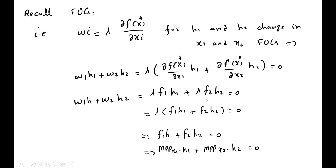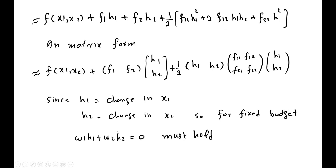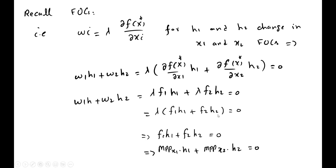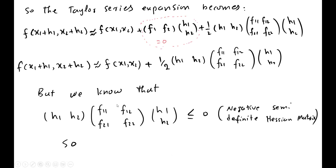We set f1·h1 + f2·h2 equal to zero because of the earlier assumption that w1·h1 + w2·h2 = 0. Here f1 is the marginal physical productivity of x1 and f2 is the marginal physical productivity of x2, since the first derivative of the production function with respect to x1 yields the marginal physical productivity of x1. Therefore the Taylor series reduces to f(x1, x2) plus one-half times the multiplication of the three second-order matrices, as the first-order term vanishes.